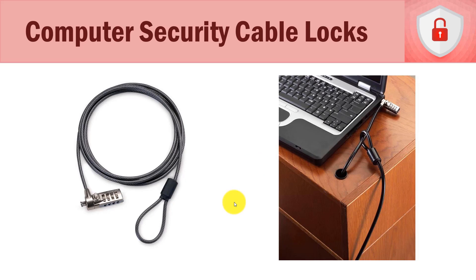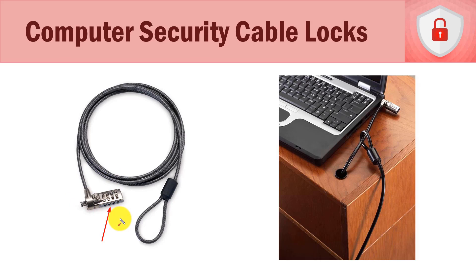The most basic and most common type of computer physical security device is the security cable lock, and we have an example here on the left. These are very common — if you have a laptop and work for a large corporation, odds are you probably have one. They can be set up with a key or a combination, and some even have an audible alarm that goes off if the system is moved.